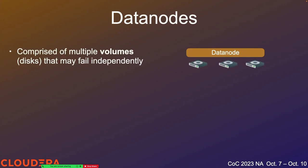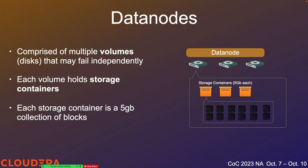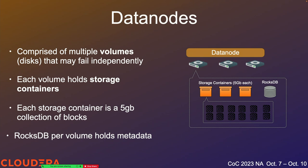Each data node is comprised of multiple volumes, usually a one-to-one mapping between a volume and a disk. Each disk can fail independently while the process is still running. Inside one of these disks are the actual storage containers — five-gigabyte collections of blocks making up the keys stored in the Ozone Manager. Each data node volume also has a RocksDB instance holding metadata about the storage containers on that volume.